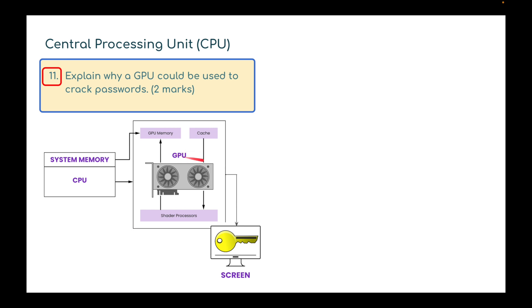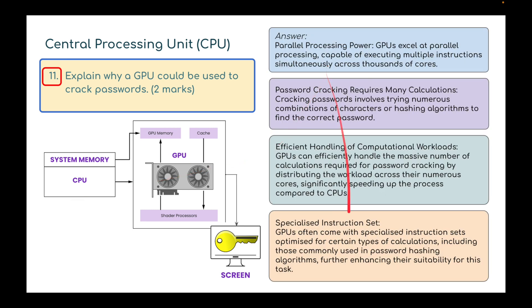Here I've got a diagram of a GPU, a graphics processing unit. Explain why a graphics processing unit would be used to crack passwords. I've broken this down into four parts. GPUs excel in parallel processing, capable of executing multiple instructions simultaneously across thousands of cores. Password cracking requires many calculations - it involves trying numerous combinations of characters or hashing algorithms to find the correct password. This is something the GPU is far better at.